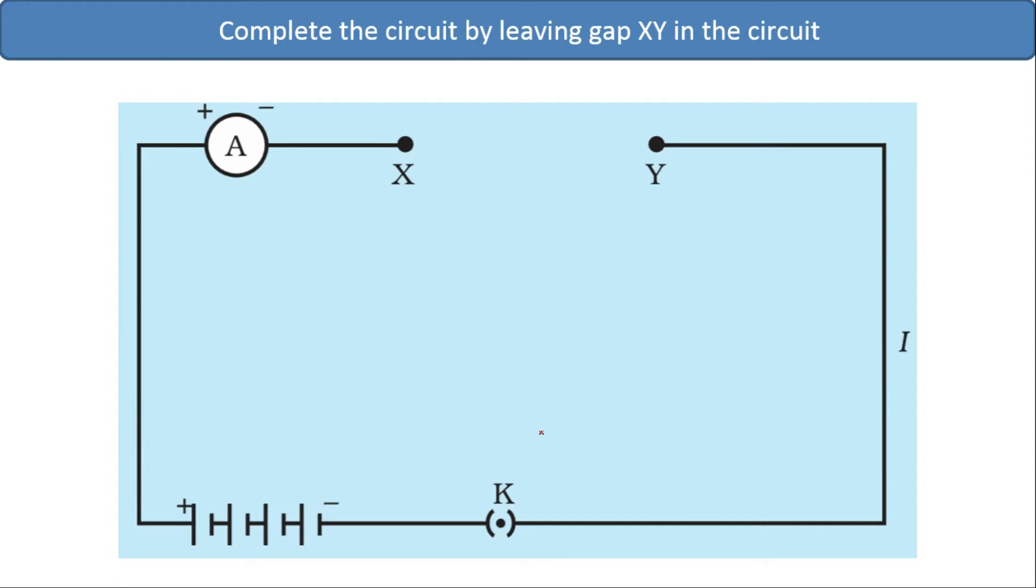First of all, complete the circuit by connecting the ammeter in series with battery and key, leaving the gap XY as shown in the figure.